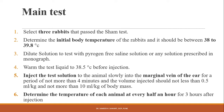Warm the test liquid to 38.5 degrees centigrade before injection. Then inject the solution slowly into the marginal vein of the ear for a period of not more than 4 minutes. The volume injected should not be less than 0.5 ml per kg and not more than 10 ml per kg of body mass. Determine the temperature of each animal every half hour for 3 hours after injection.